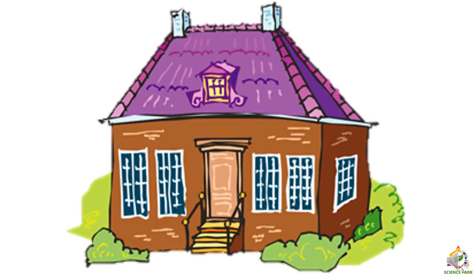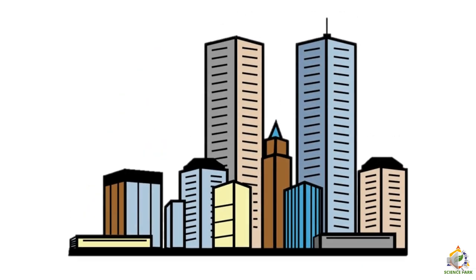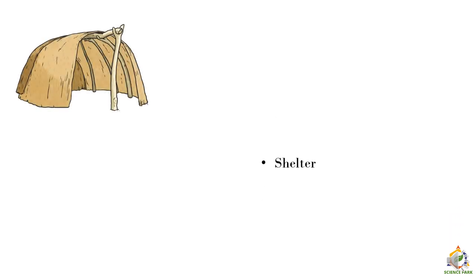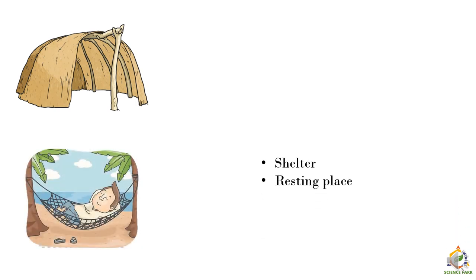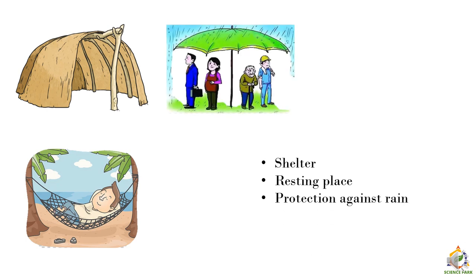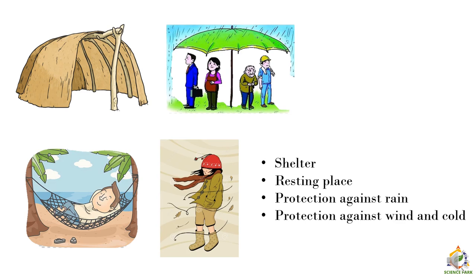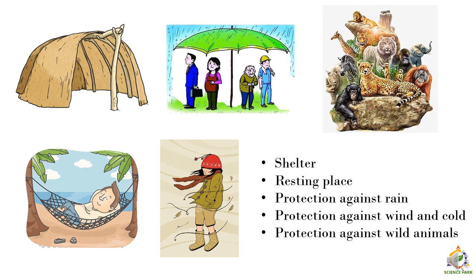When the word 'shelter' comes to mind, we usually picture something like a simple house, but nowadays in urban areas and cities like Pune, Mumbai, and Delhi, we all live in tall buildings and apartments. The main uses of shelter are: it is a resting place — after a hard day of work we need a place to rest. Shelter also protects us from various elements such as rain, wind, cold, and wild animals.